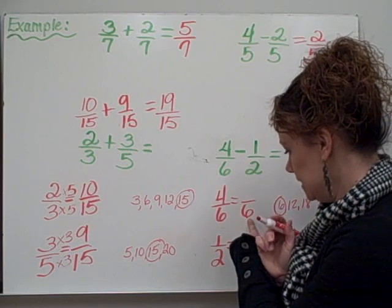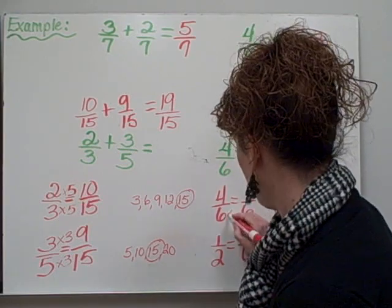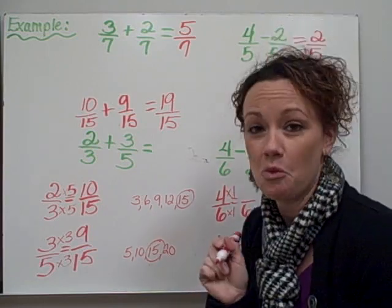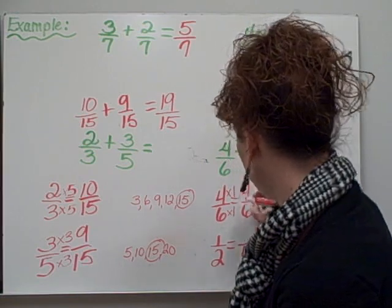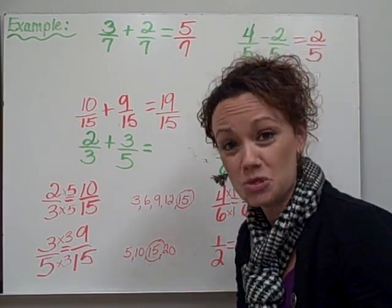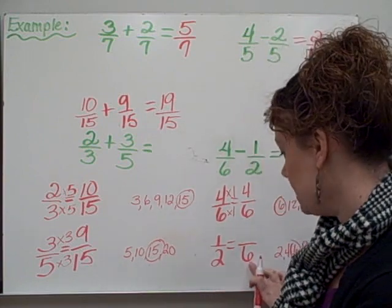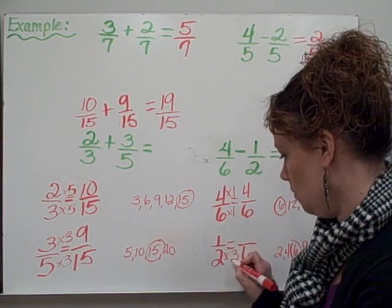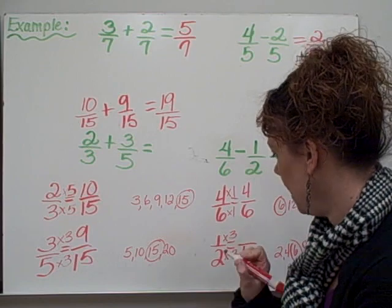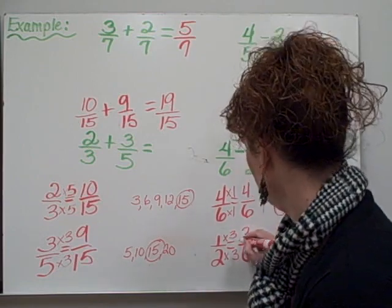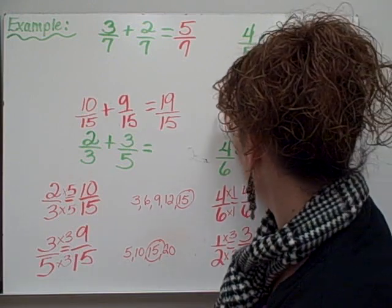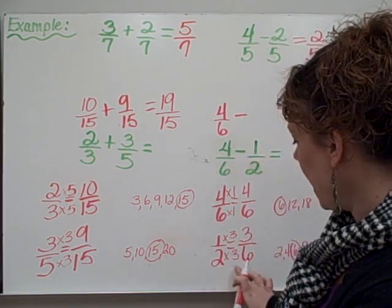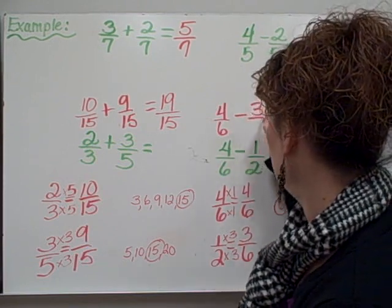How do we get from 6 to 6? With multiplication, we just multiply by 1. Whatever we do to the bottom, we must do to the top, so we also multiply our numerator by 1. And 4 times 1 equals 4. This fraction actually stayed exactly the same, which will sometimes happen. Down below, how do we get from 2 to 6? We multiply by 3 — 2 times 3 equals 6. Whatever we do to the bottom, we must do to the top, and 1 times 3 equals 3.